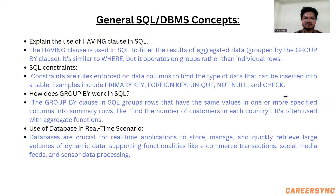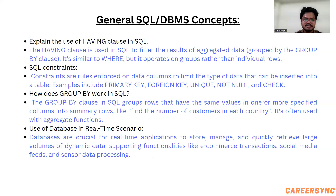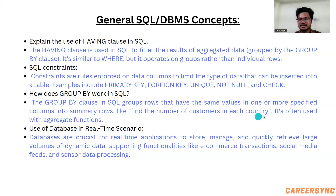Explain the use of the HAVING clause in SQL. The HAVING clause is used in SQL to filter the results of aggregate data. What are SQL constraints? Constraints are rules enforced on data columns to limit the type of data that can be inserted into a table — examples include primary key, foreign key, unique, not null, and check. The GROUP BY clause groups rows that have the same values in one or more specified columns into summary rows, like finding the number of customers in each group.